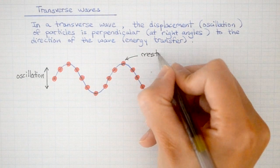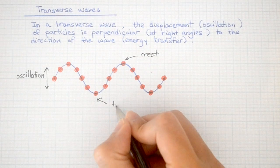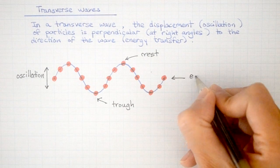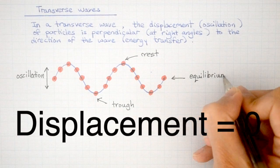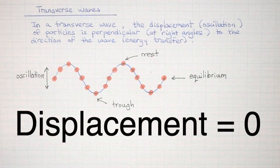The maximum displacement is known as the crest. The minimum displacement is known as the trough. And in between, where the displacement is zero, we have the equilibrium.